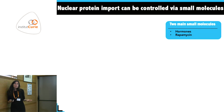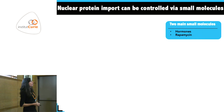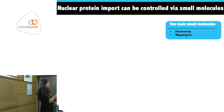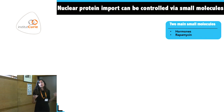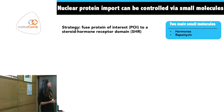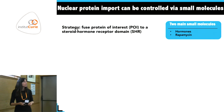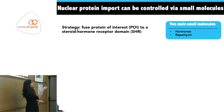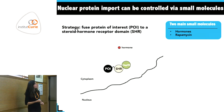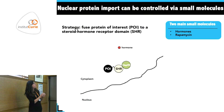There are already methods to control import of proteins. The two main ones use either hormones or a small molecule like rapamycin. In one approach you fuse your protein of interest to a steroid hormone receptor domain — in the absence of hormone the protein is bound to Hsp90, keeping it stuck in the cytoplasm.